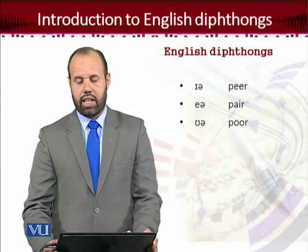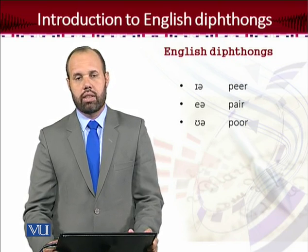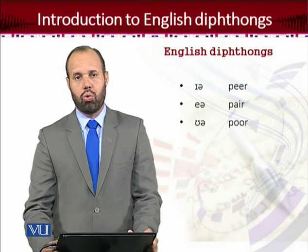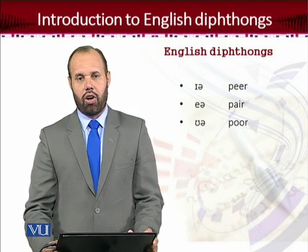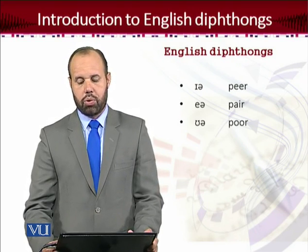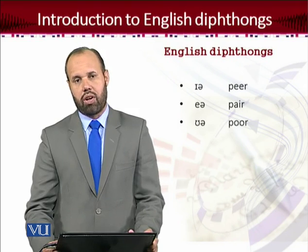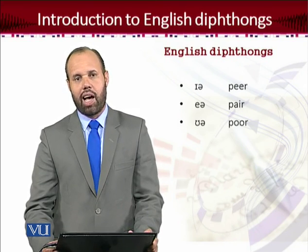Then there is the third centering diphthong, which is /ʊə/. The starting sound is /ʊ/ and the ending sound is the central schwa sound — /ʊə/. In words like 'poor' or 'tour.' These three are the centering diphthongs of English RP.